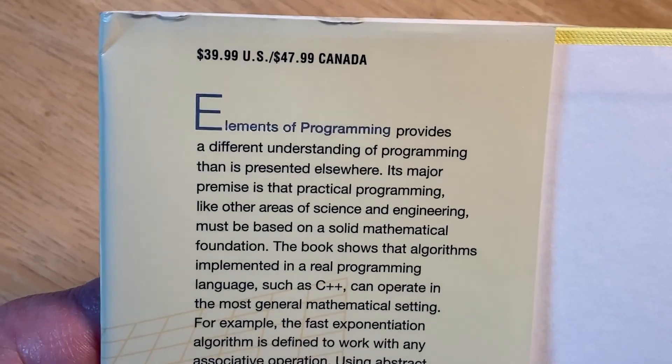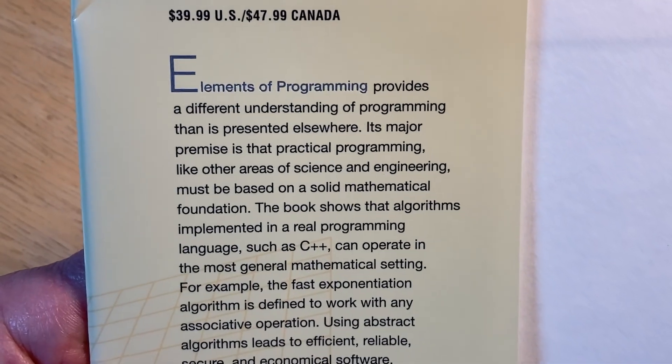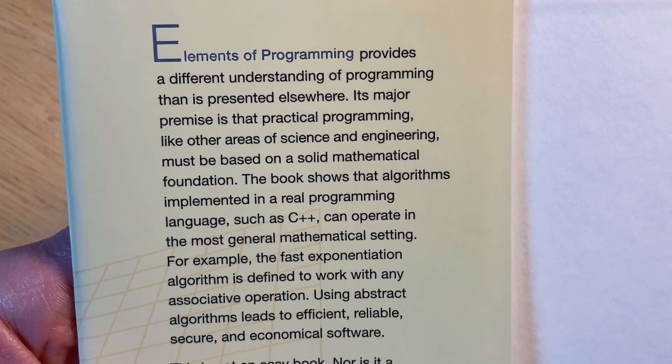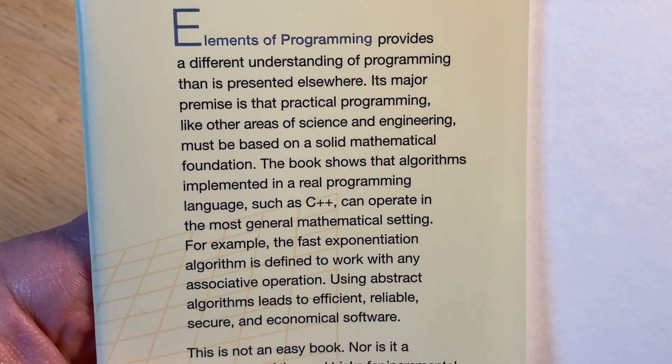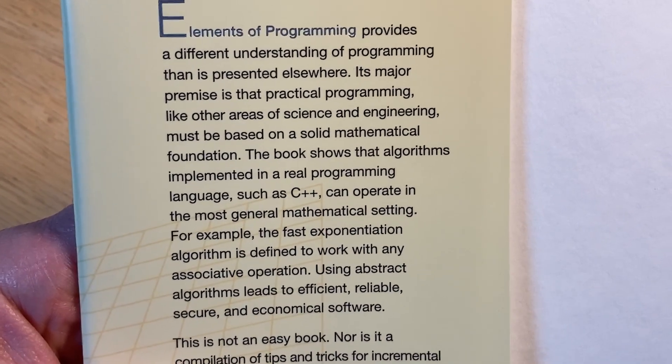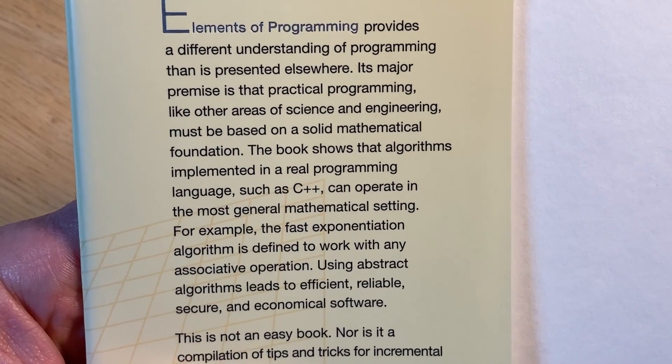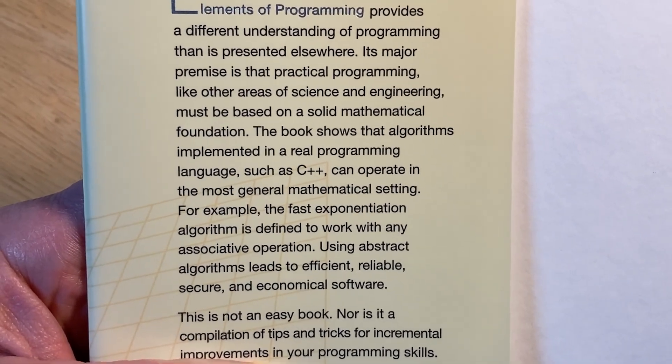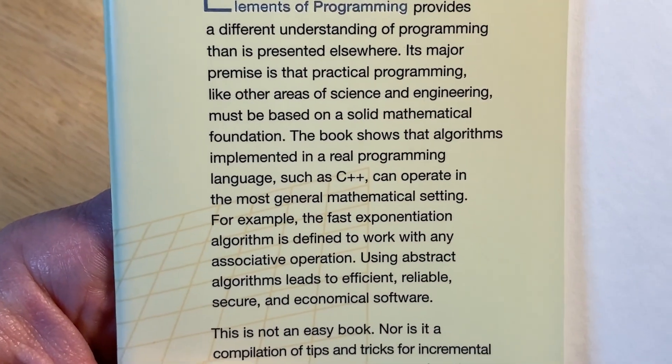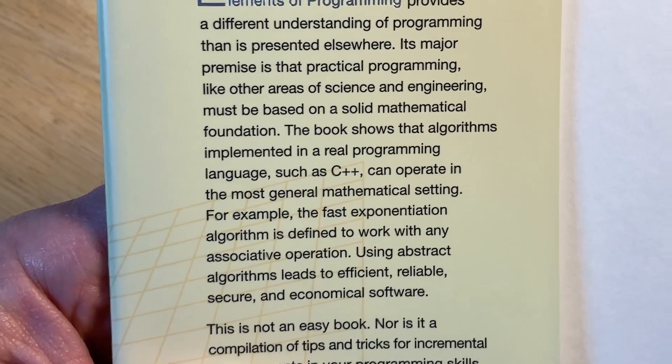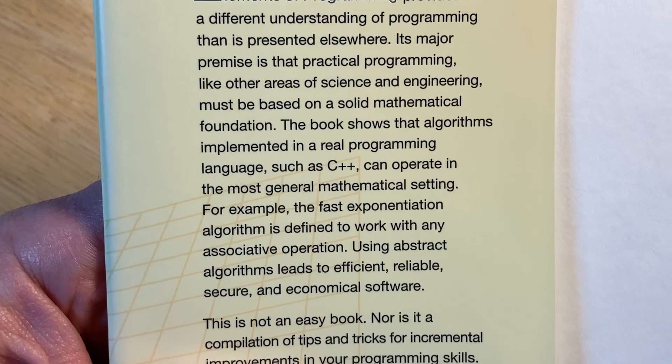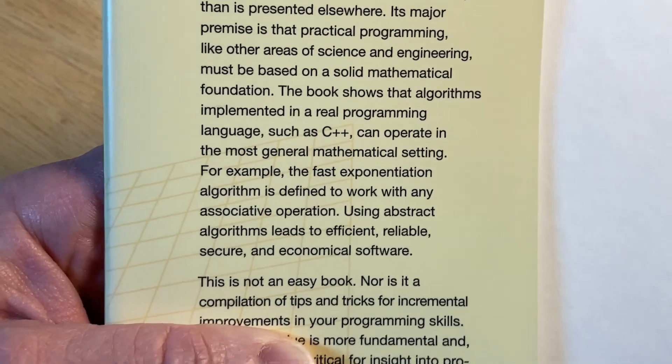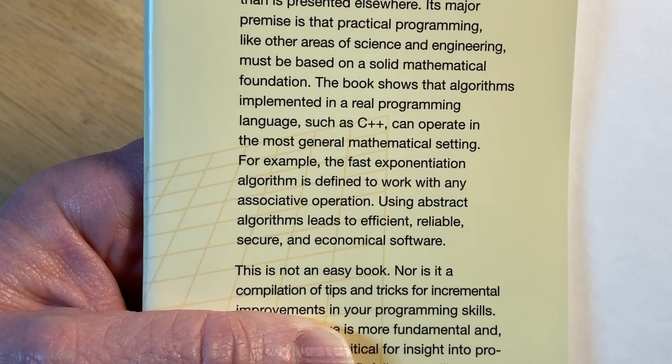Elements of Programming provides a different understanding of programming than is presented elsewhere. Its major premise is that practical programming, like other areas of science and engineering, must be based on a solid mathematical foundation. The book shows that algorithms implemented in a real programming language, such as C++, can operate in the most general mathematical setting. For example, the fast exponentiation algorithm is defined to work with any associative operation.